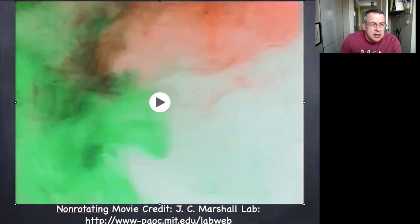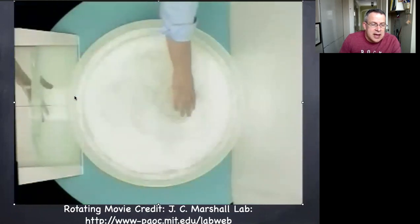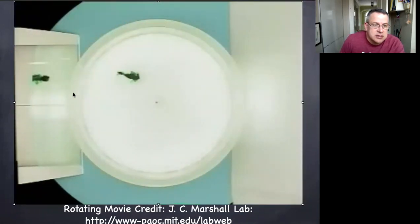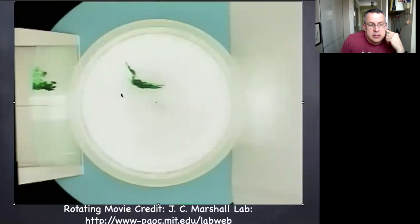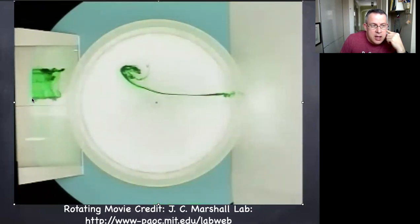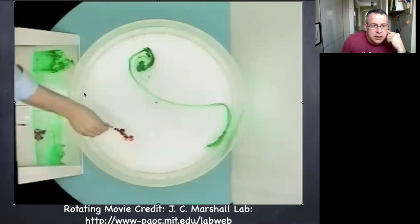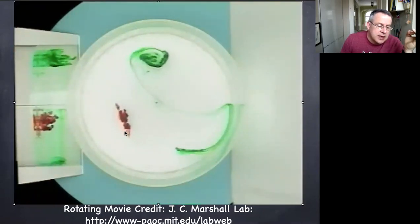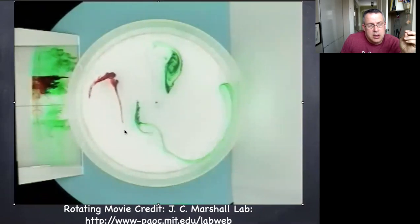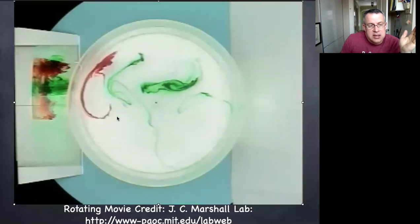Let's see what happens if you rotate the tank. This is the same setup, except now the tank is rotating — the camera is actually in the frame of the tank. Notice as people's arms come in, they're going around in a circle. There's the squirt of dye, very similar to last time. But now it's not spreading out the same way in the horizontal direction at all. The fact that the tank is rotating has really changed the impact of the stirring on the fluid and limited the class of motions that are allowed.